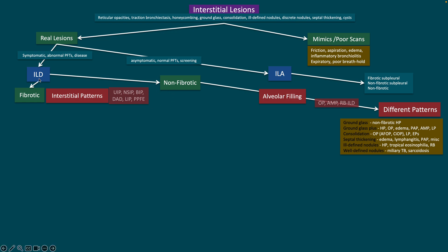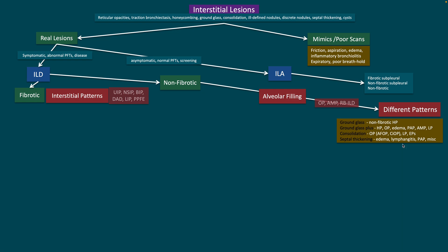Once you have an ILD, this is where things change. The interstitial and alveolar filling patterns have been introduced, but we still need to know mentally whether these are fibrotic or non-fibrotic. The non-fibrotic ones are predominantly alveolar filling — three new categories: organizing pneumonia, AMP (alveolar macrophage pneumonia, previously called DIP), and RBILD. The guidelines haven't addressed many other conditions like miliary TB, sarcoid, tropical eosinophilia, and pulmonary edema, all of which we'll address.